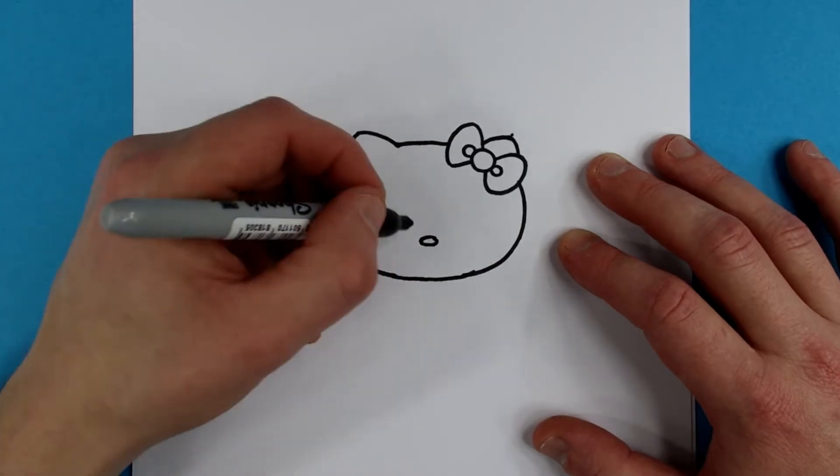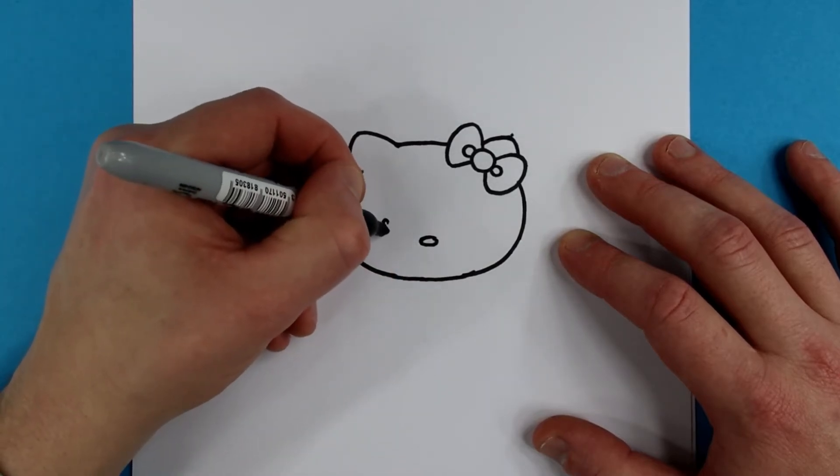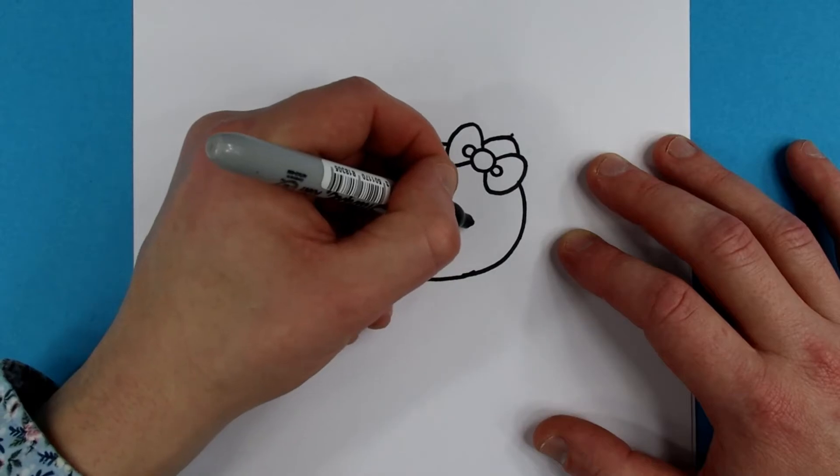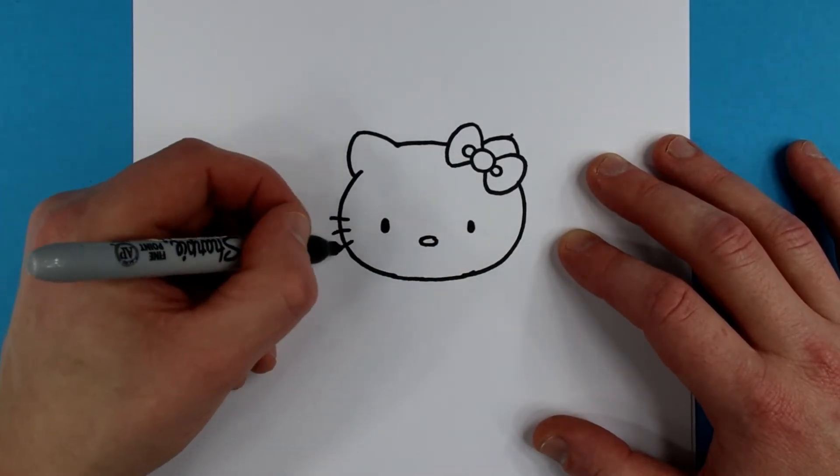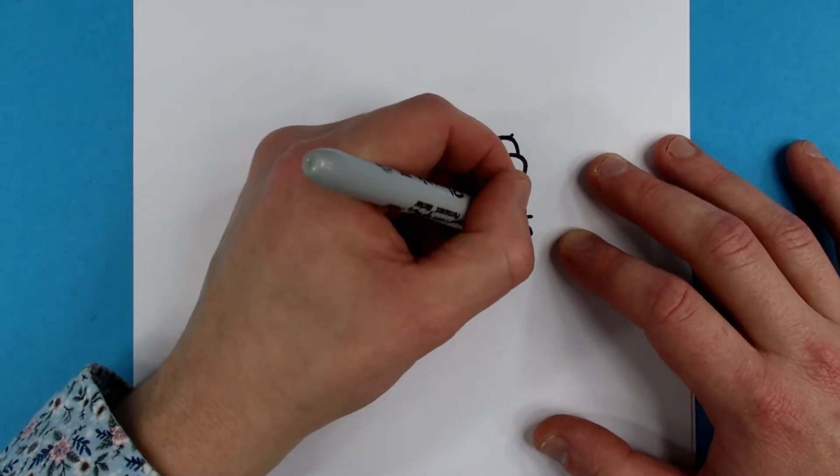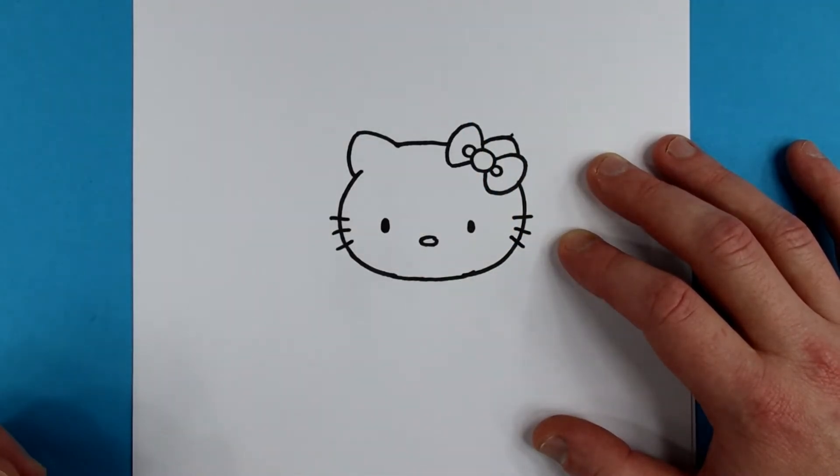Draw in an oval for the nose, and in the center, two eyes. Whiskers. Three here and three on this side. And we're done for the head.